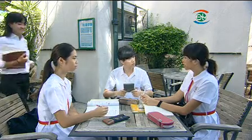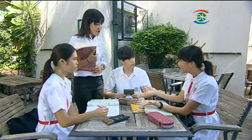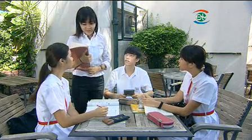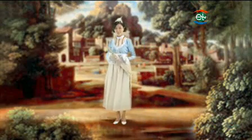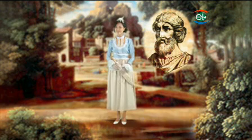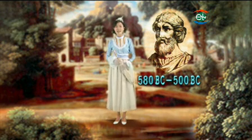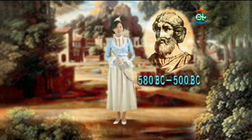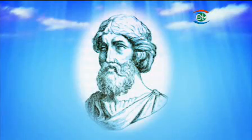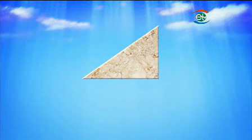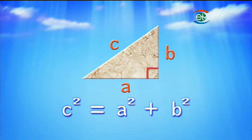But if we need to mark the square root of 3 exactly on a number line, how do we do it? We need to use Pythagoras theorem. Pythagoras theorem was discovered by Pythagoras, a famous mathematician and philosopher of ancient Greece between 580 BC and 500 BC. He is most renowned for discovering and proving that for any right angled triangle, the square of the length of the hypotenuse equals the sum of the squares of the lengths of the other two sides — that means c² = a² + b².